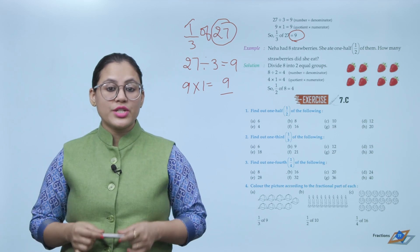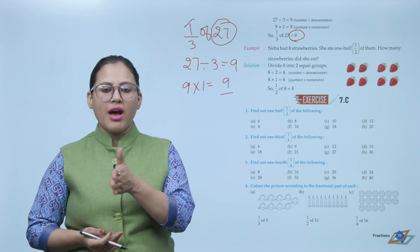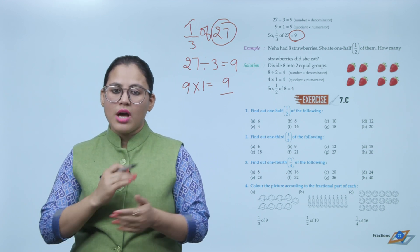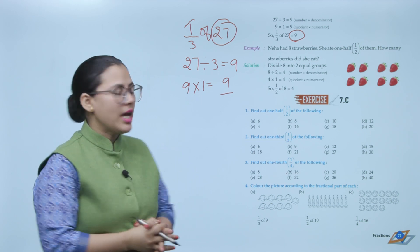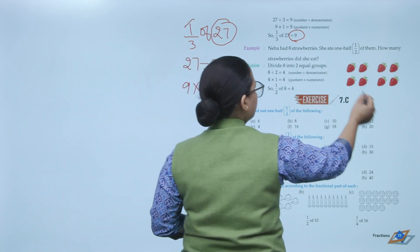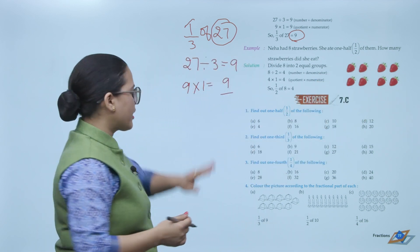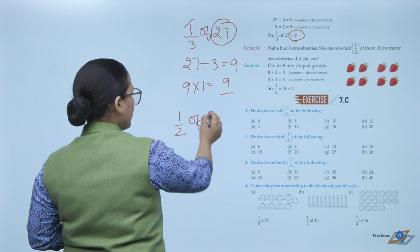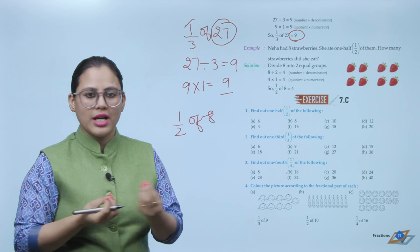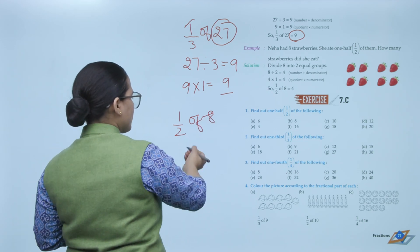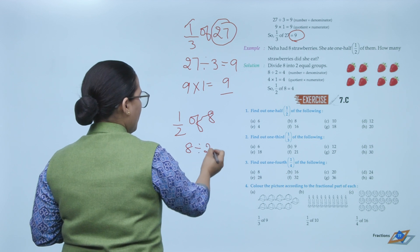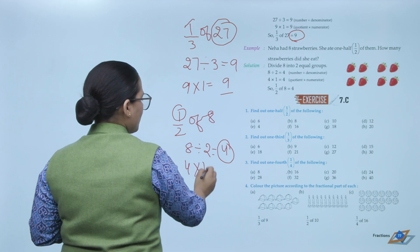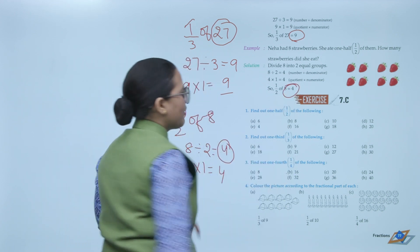Example: Neha had 8 strawberries. She ate one half of them. How many strawberries did she eat? Find half of 8: divide 8 by 2, which gives 4. Then multiply 4 by 1, which equals 4. So the answer is 4 — half of 8 is 4.